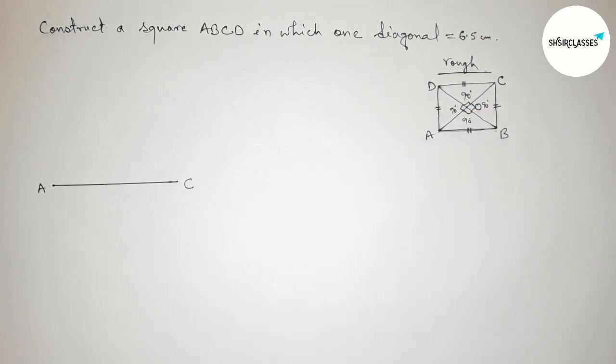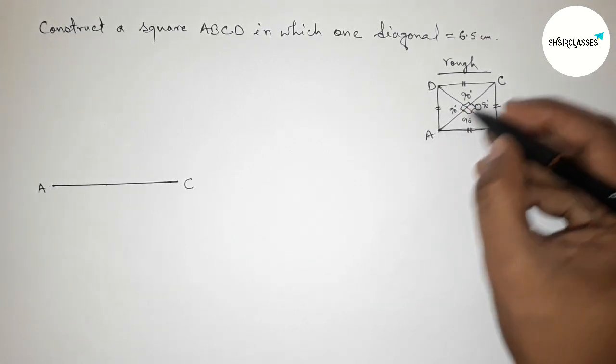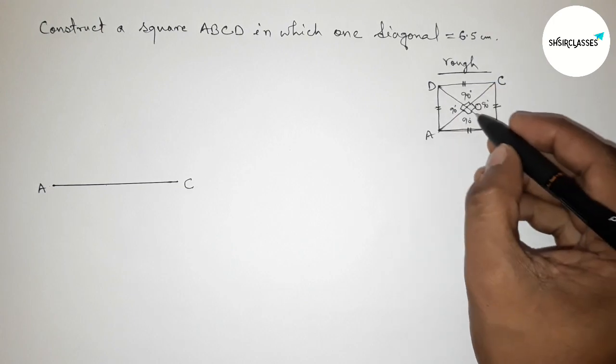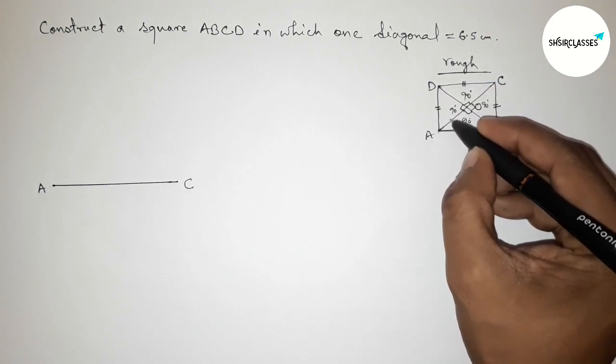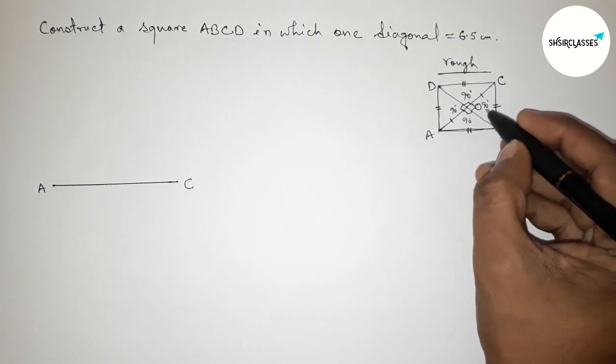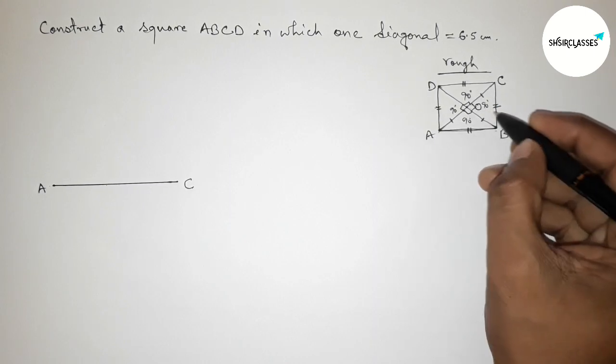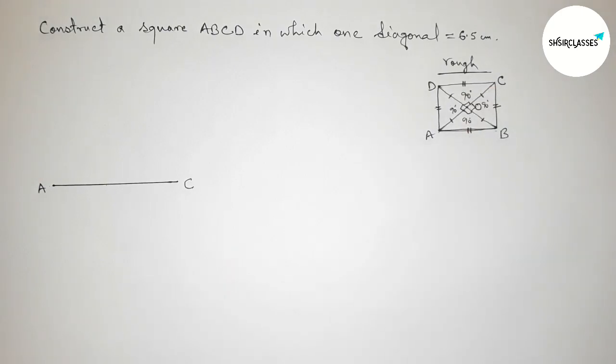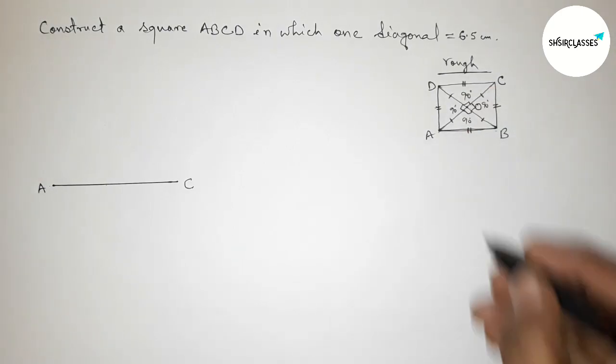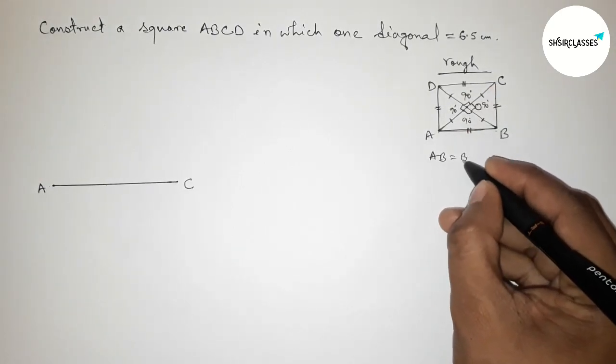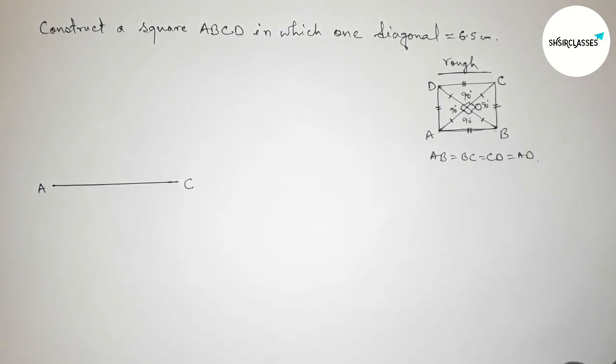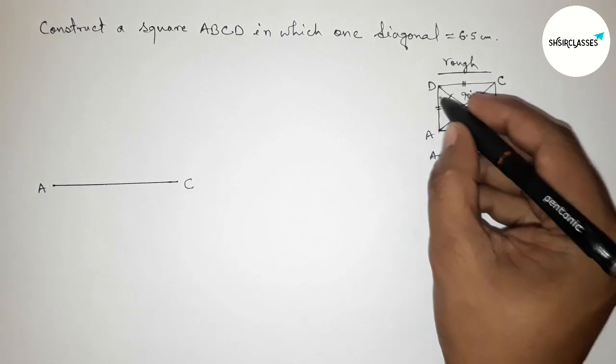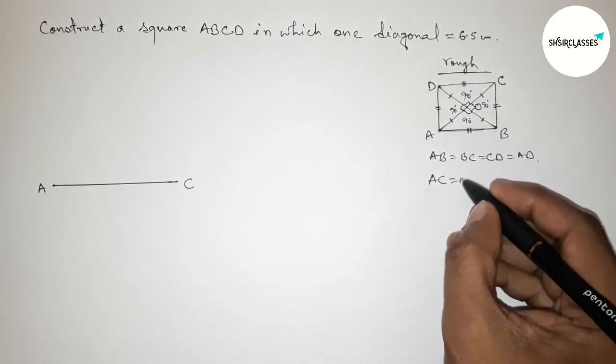Now talking about some property: all the side of a square are equal and here also the two diagonal AC and BD bisect each other at the point O, so the length OA and OC equal with OB and OD. So all the lengths are equal.